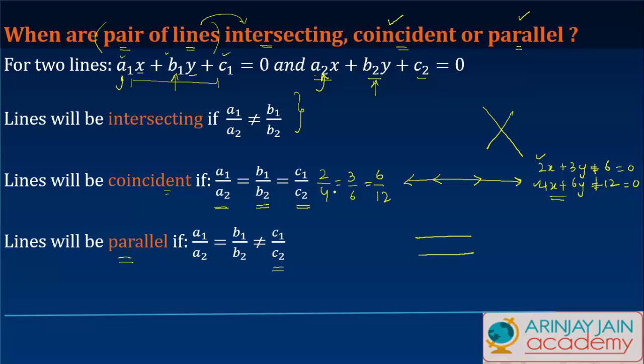If you notice, in all three cases: 2/4 equals 1/2, 3/6 equals 1/2, and 6/12 equals 1/2. In other words, a1/a2 equals b1/b2 equals c1/c2, so these lines are coincident.